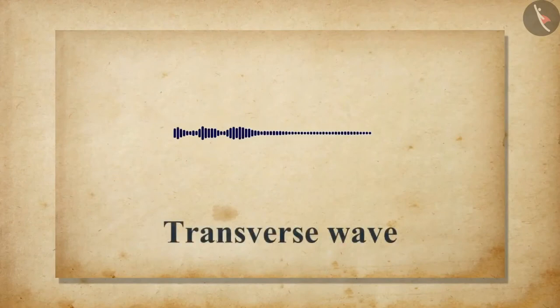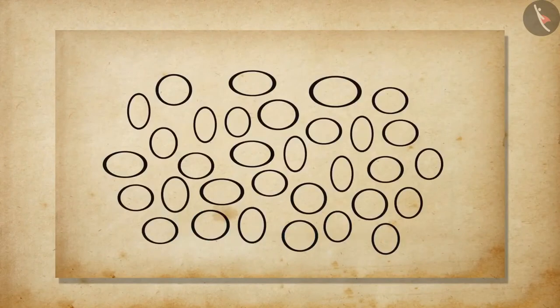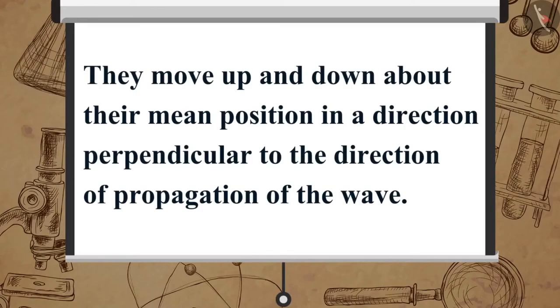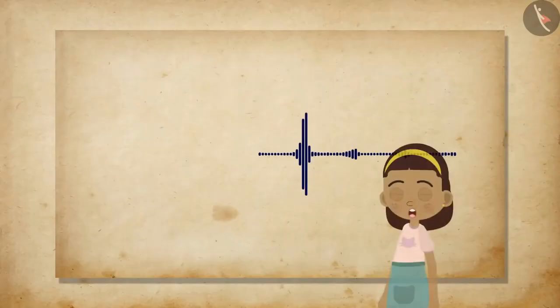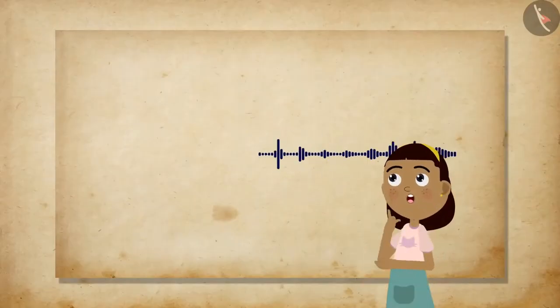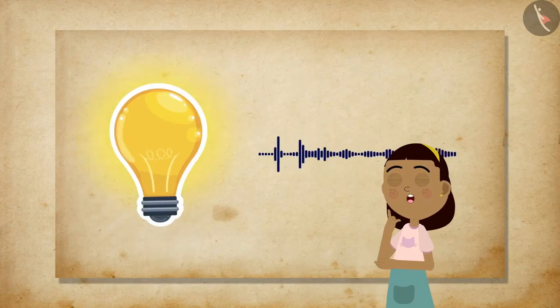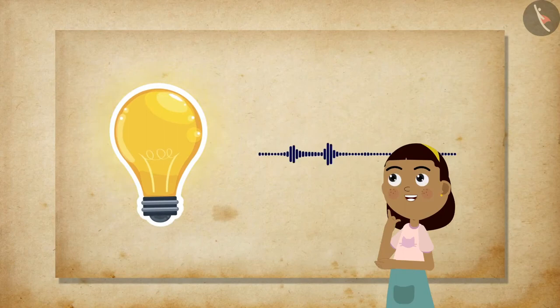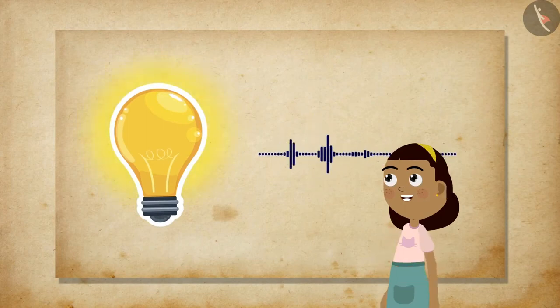There exists another type of wave known as transverse waves. The particles in a transverse wave do not move back and forth, but they move up and down about the mean position in a direction perpendicular to the direction of propagation of the wave. One example of a transverse wave is light, but in light the oscillations are not of the medium particles or pressure or their density, as it is not a mechanical wave.